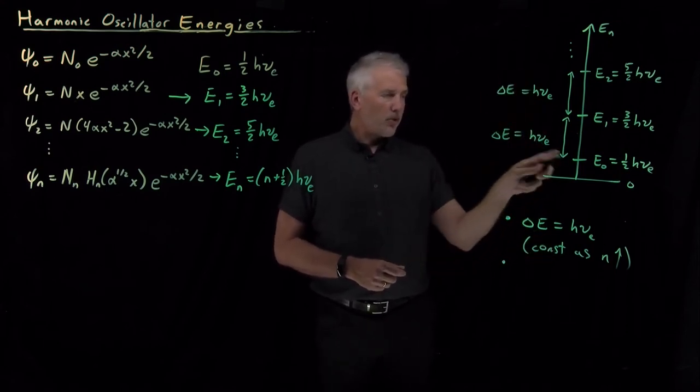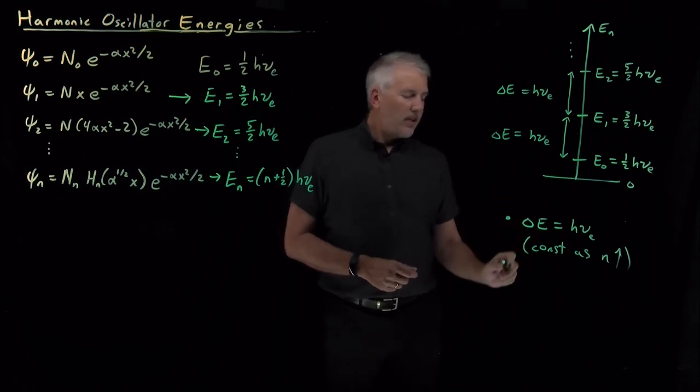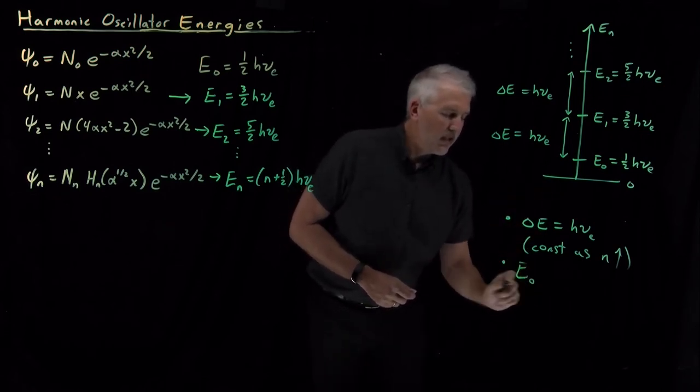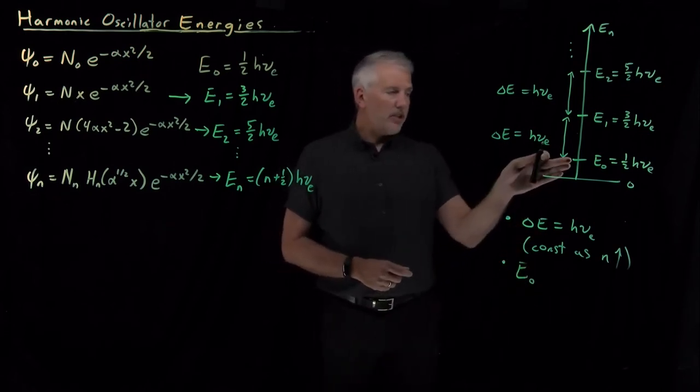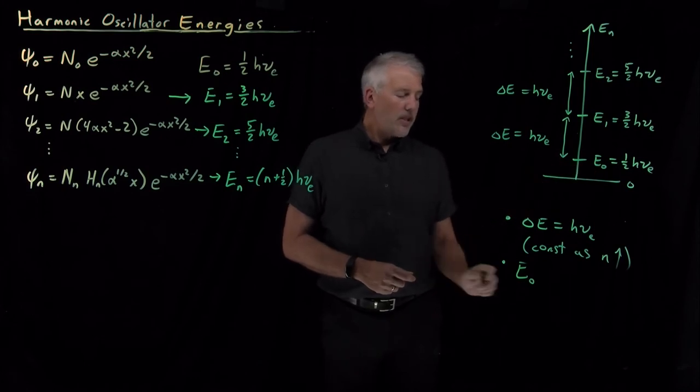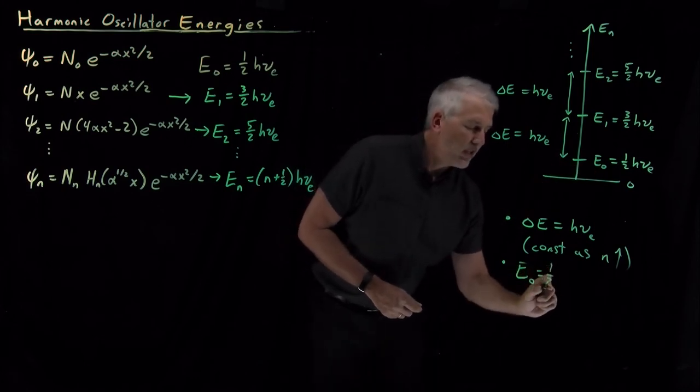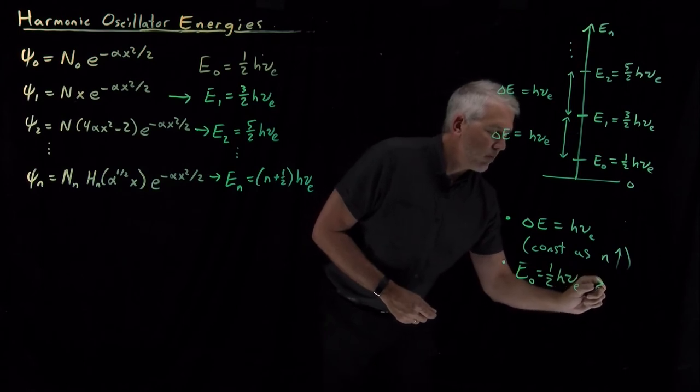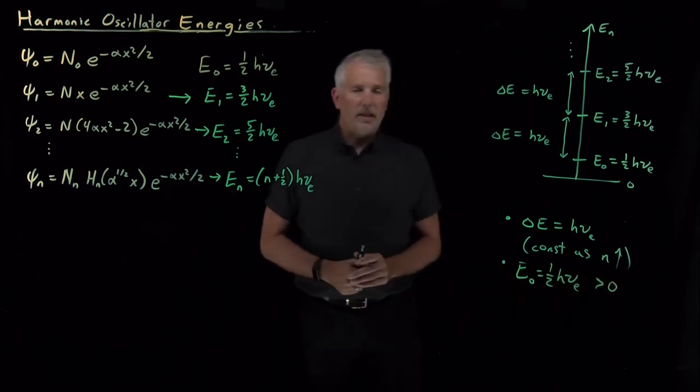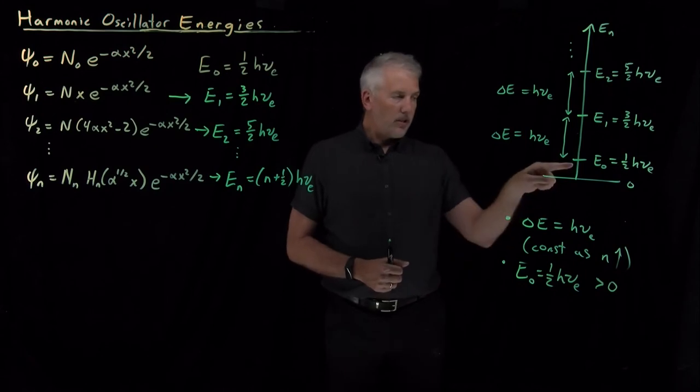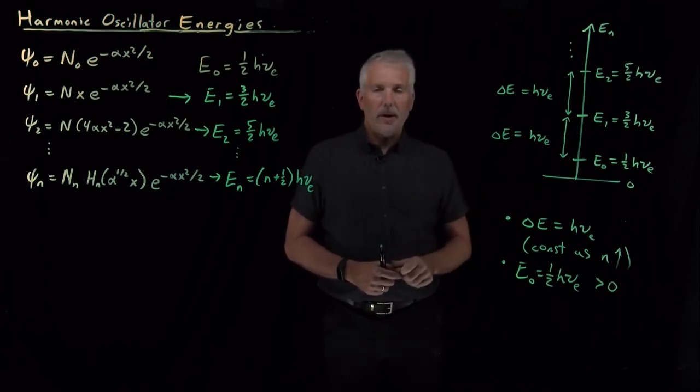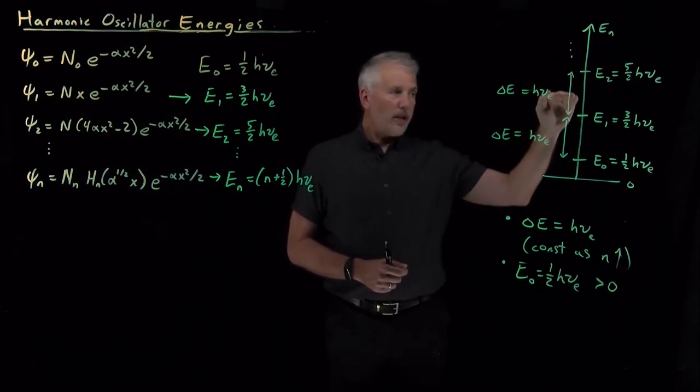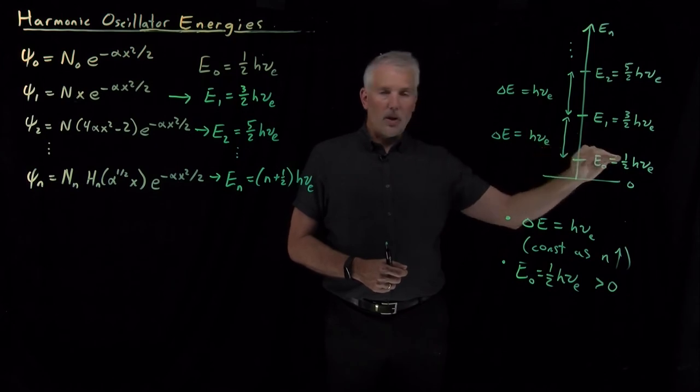The other important point worth mentioning is that the ground state energy, the energy for the n equals zero state, we've seen that that's equal to one-half times h nu. The relevant fact here is that number is not zero. It's bigger than zero. The lowest energy is a positive energy. So there's no way to lower the energy of the system any lower than one-half h nu.